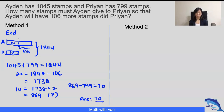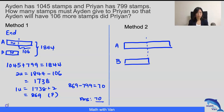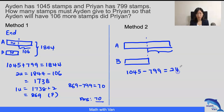Now let's take a look at the other approach where we will make use of the model more extensively. We start off by drawing the 'at first' model for both Aiden and Brian, and then we are going to add out the changes after that. In this case, what do we know of the difference? We can just take 1045 minus 799, and that will give us 246.